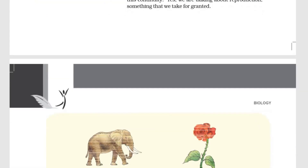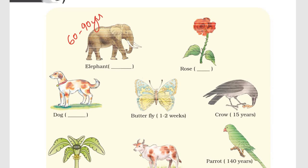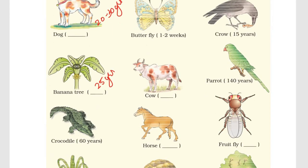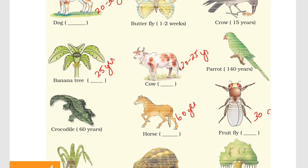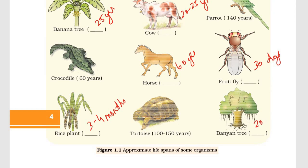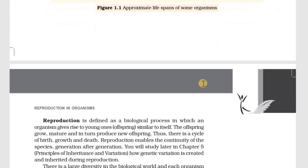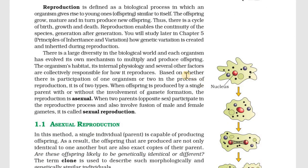In the next page, there are pictures. We will study their lifespan. The board exam is not very useful for this, but the entrance exam is good — there are many questions. I have given them the lifespan. The next page is called Reproduction. Reproduction is defined as a biological process in which an organism gives rise to young ones similar to itself. An organism gives rise to an offspring, and this process is called Reproduction.